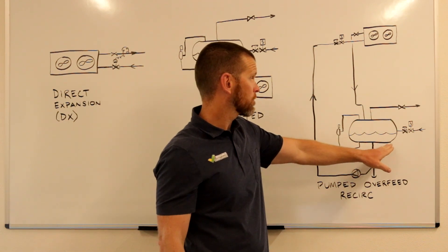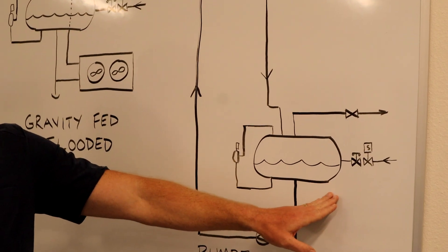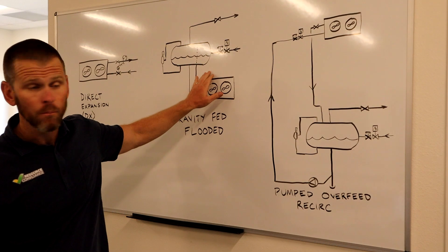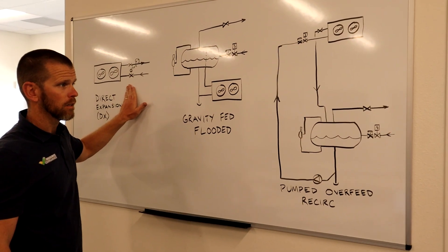Therefore, the refrigerant charge for a pumped overfeed system is typically lower than the equivalent flooded system, but still higher than the direct expansion system.